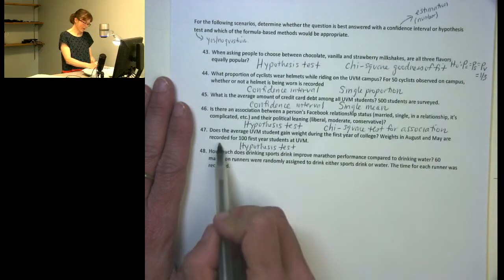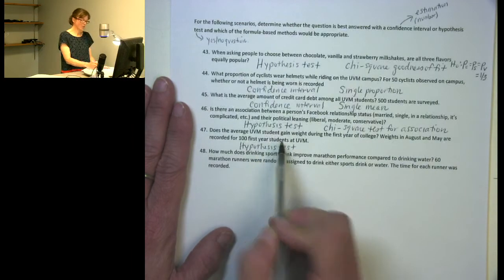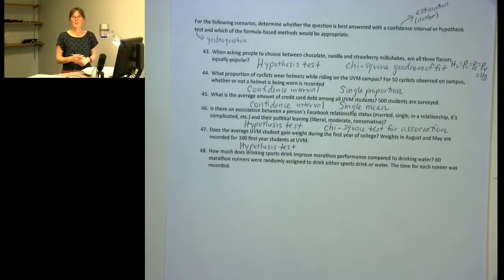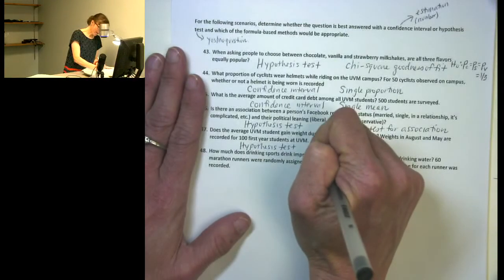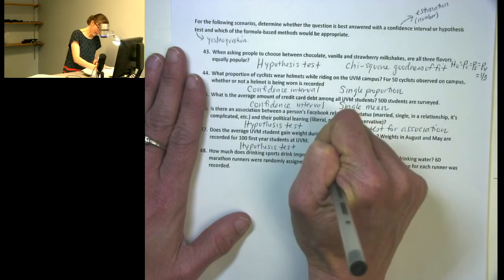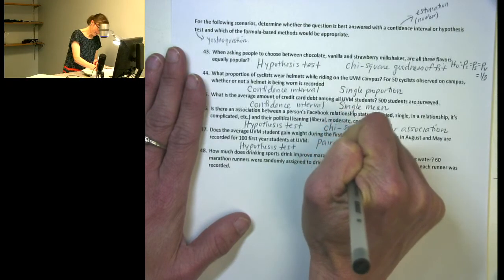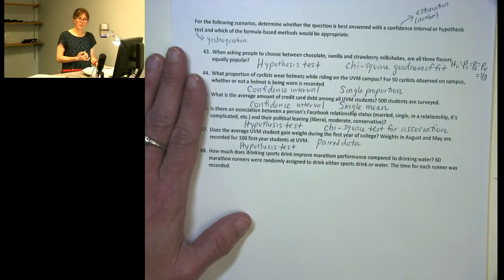Weights in August and May are recorded for 100 first-year students. Okay, so presumably these are the same students being recorded both in August and in May. So I have paired data, weight measured more than once on each student.